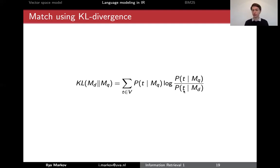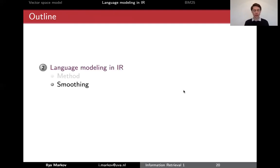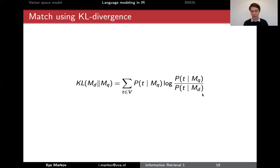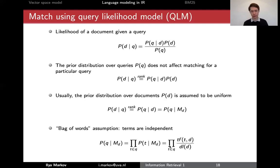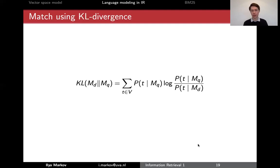In IR we use query likelihood models more, and in your homeworks you can implement both, run evaluation, and see what works better for that particular collection. However, the problem with this model is that if a term doesn't occur in a document, the probability is zero, and if at least one term doesn't occur in a document then the whole QLM is zero — and if this is zero for at least one term you just can't compute it.